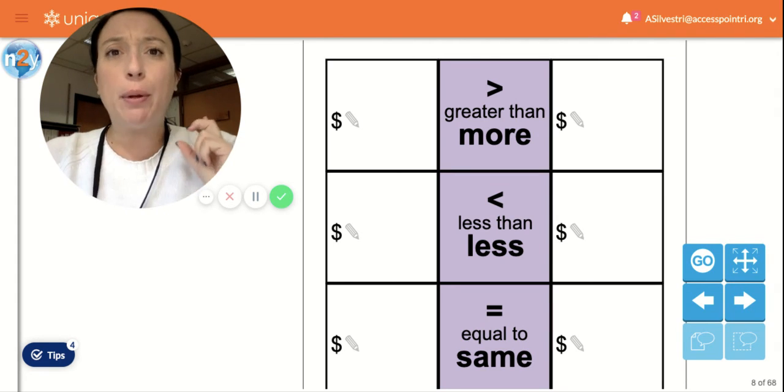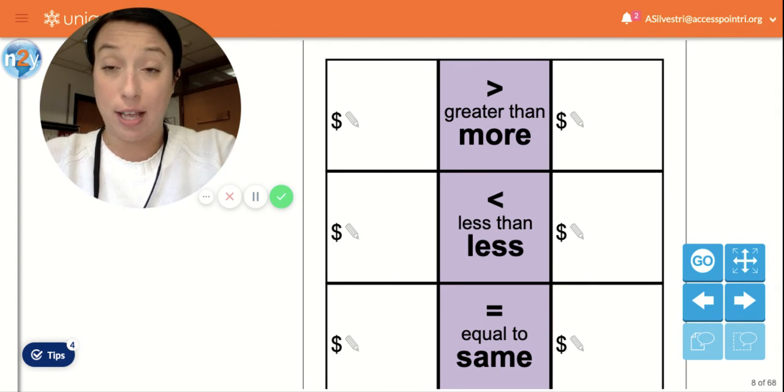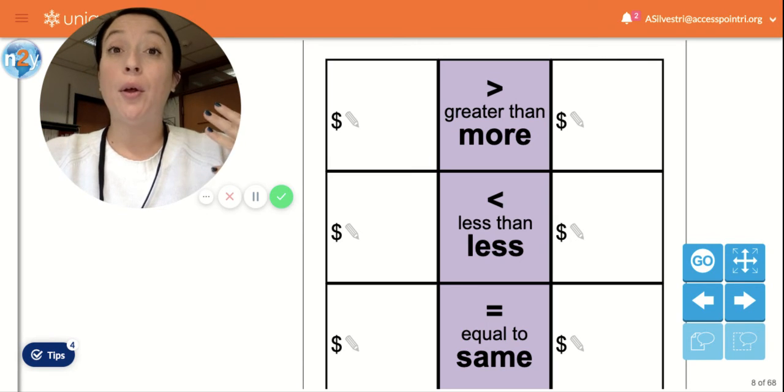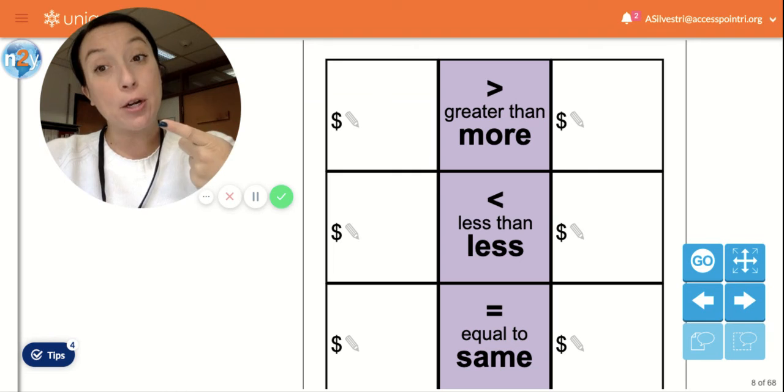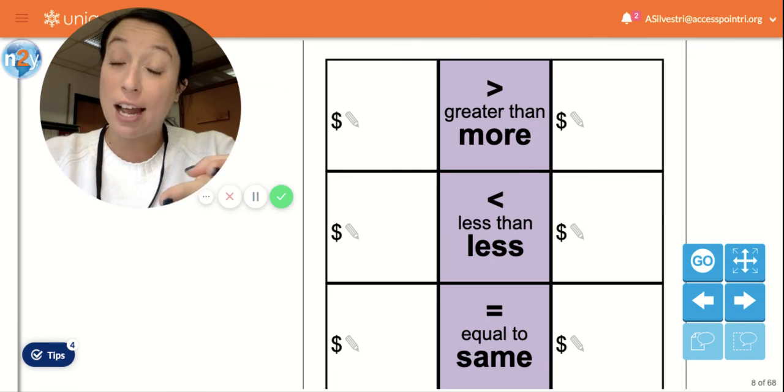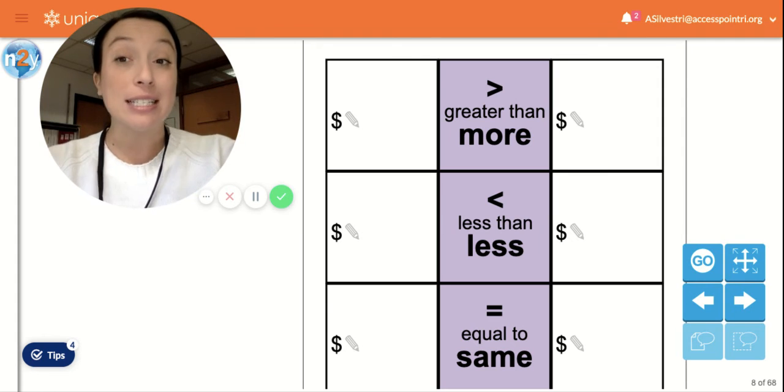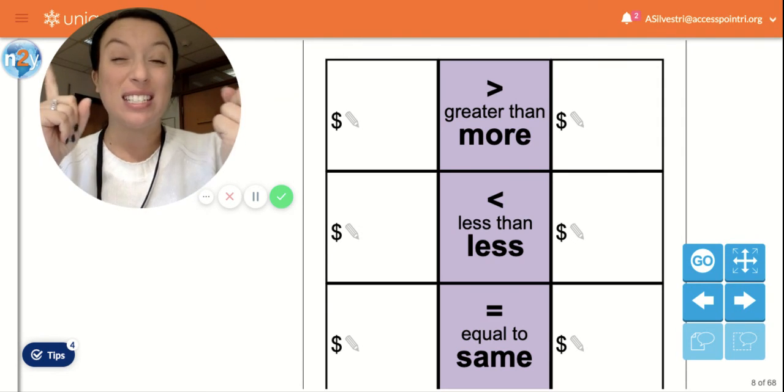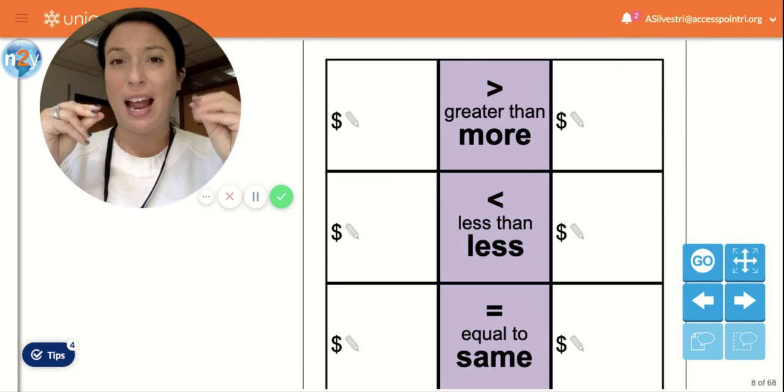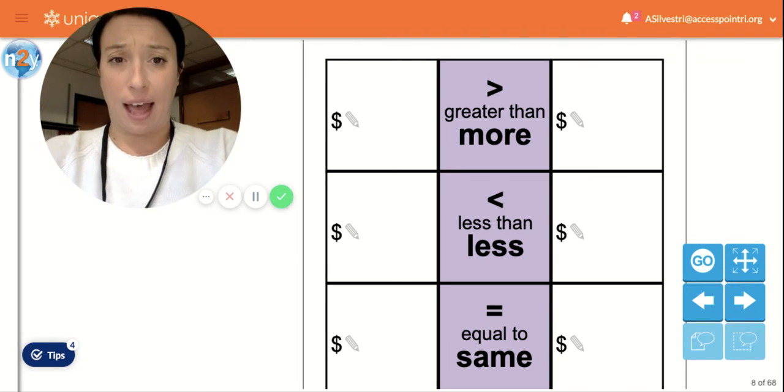So we have three symbols. You can look over here at my cursor. We have the greater than or more, right? When something's more, it's bigger. We have the less than, smaller. More and smaller. And we have the equals to. I think we're a little bit more familiar with the equals to sign, because I know at school and at home we work on things that are the same. So it's the same numbers, the same colors we match. Things might have the same taste, the same sound, they might have the same smell, they also might have the same feel. So we're pretty good with that, but we're going to work on it a little more.